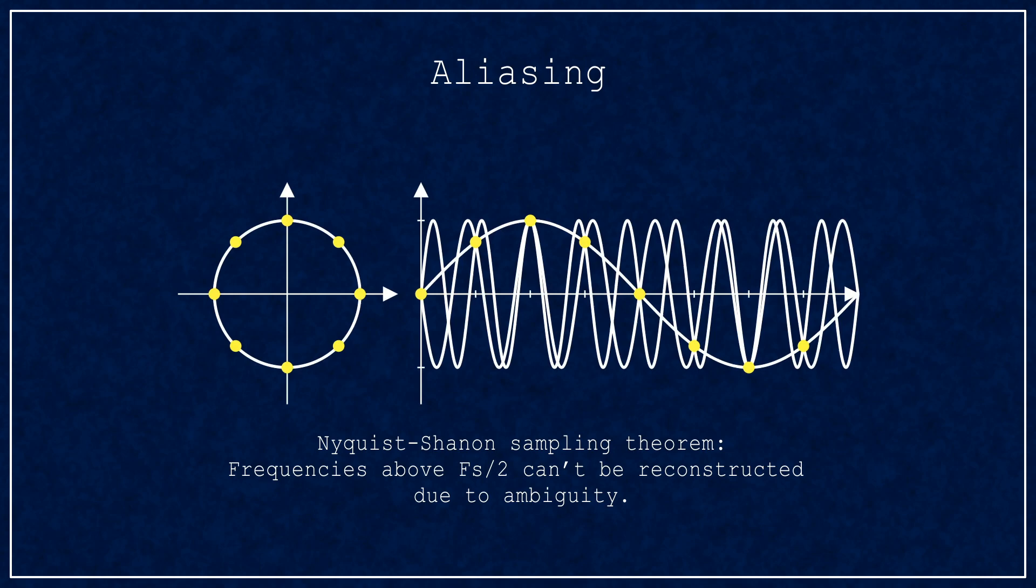This leads people to say you must use sampling frequency at least twice as fast as your system. This is necessary for signal reconstruction, but it is not the whole story for control.